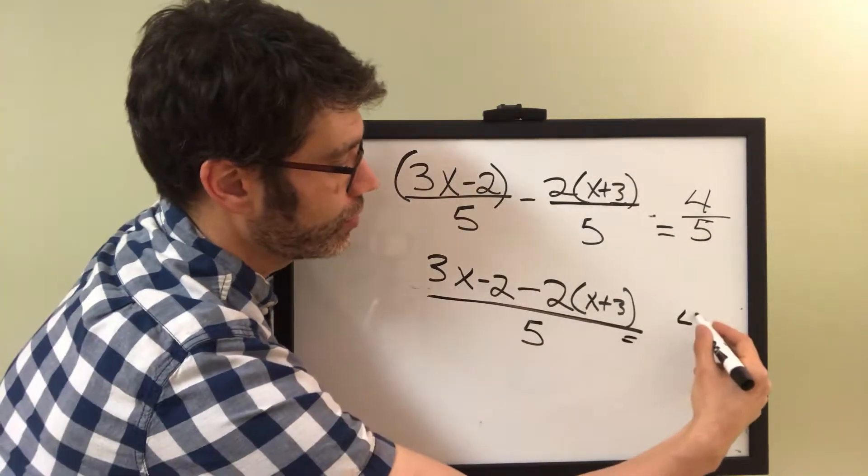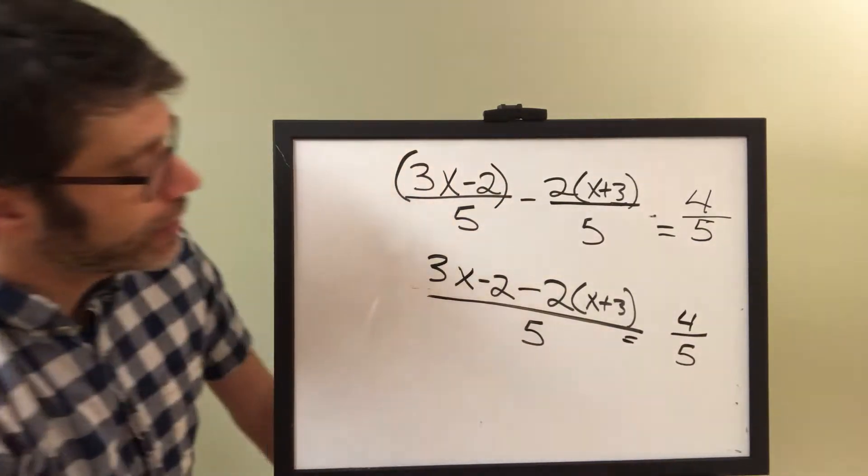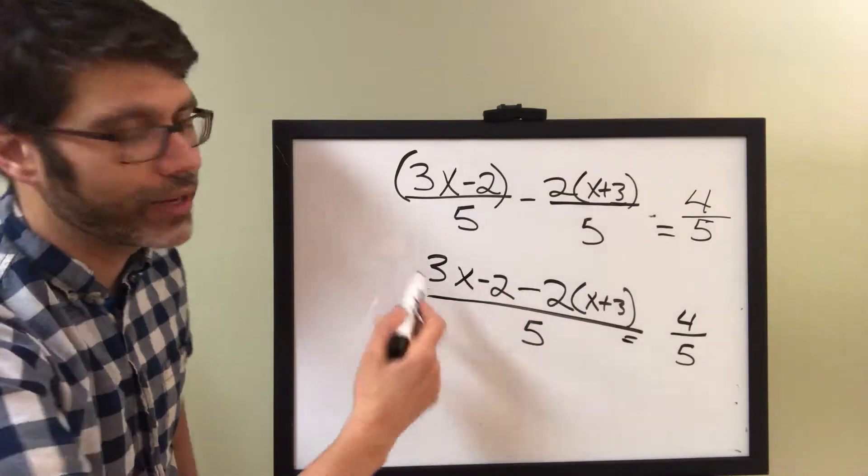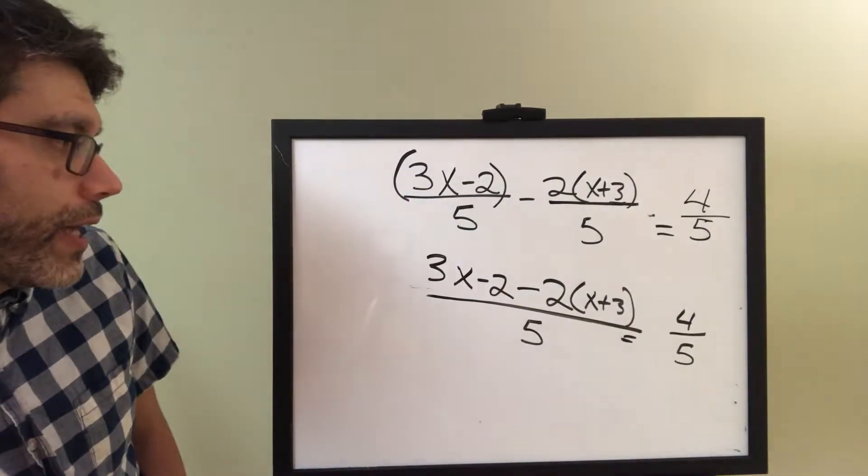So let's subtract 2x plus 3, and we'll put that all over 5, and then that's equal to 4 fifths. Let's see what we can do here if we can combine any like terms.